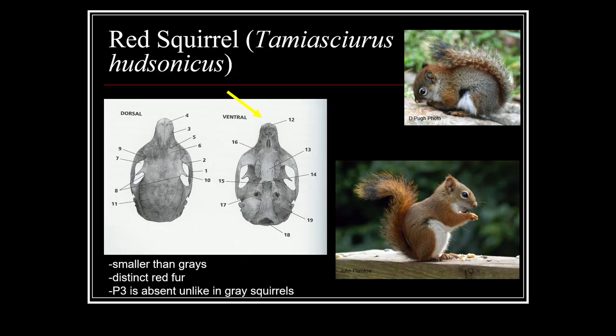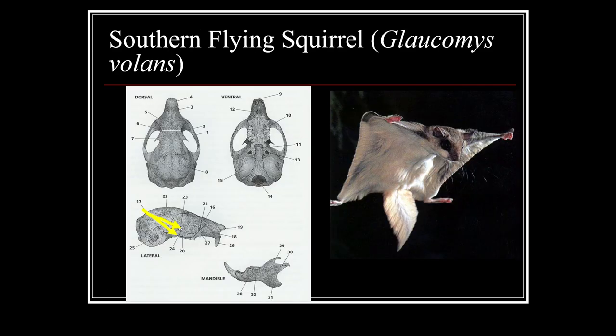Next is our red squirrel, Tamiasciurus hudsonicus. These are the smallest of the three we're looking at, and they have a really distinct red fur — a lot more red than the tinge you see in the fox squirrel. Another good characteristic is that the ears tend to have tufts on the top. So ear tufts, red fur, and very small size are what you're looking for to identify a red squirrel.